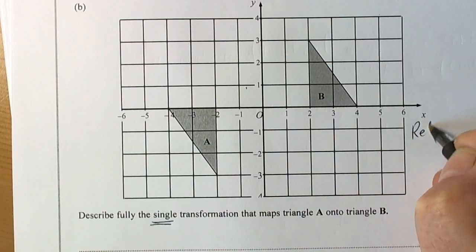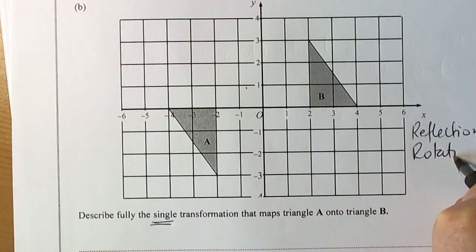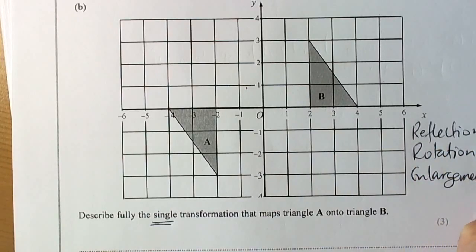And that's how the translation would work. We could either reflect the shape, so it could be a reflection, it could be a rotation, it could be an enlargement, or as we saw in the first part of this question, it could be a translation.